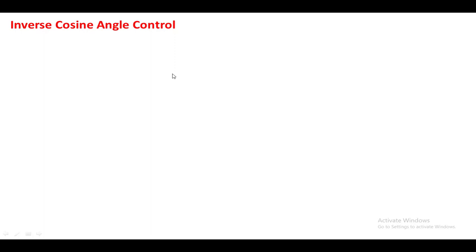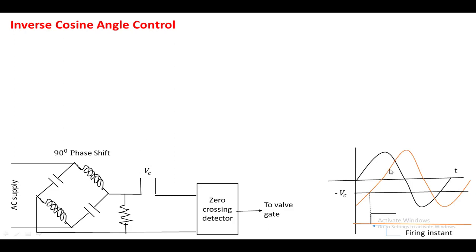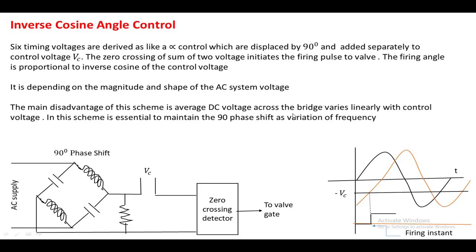Inverse cosine angle control is almost similar to constant alpha control. The only difference is that the six line voltages generated via the transformer through the buses before the converter are shifted by 90 degrees, and that shifted voltage is added to the control voltage. Whenever this shifted voltage intersects the control voltage, the firing angle pulse is generated. The firing angle depends upon the magnitude and shape of the AC voltage. The main disadvantage of this scheme is that the average voltage across the bridge varies linearly with the control voltage, and it is essential to maintain the 90-degree phase shift as frequency varies.